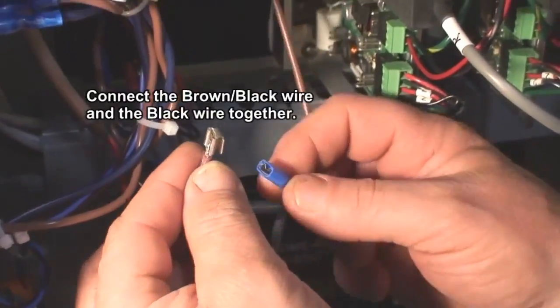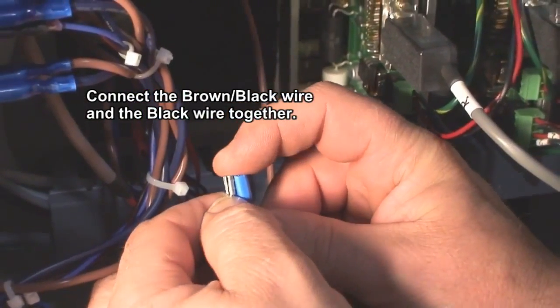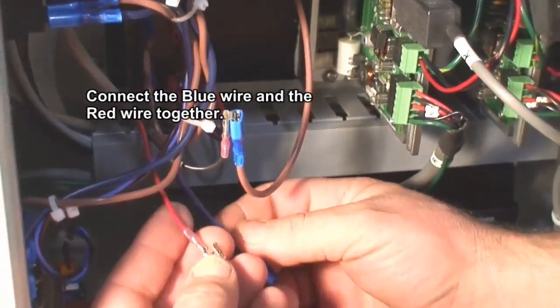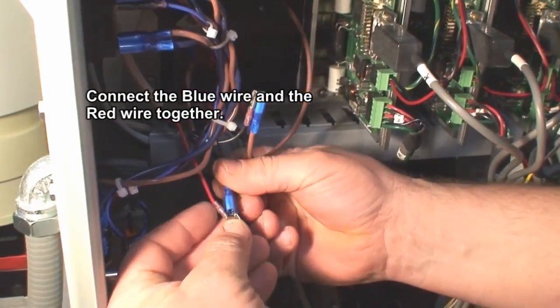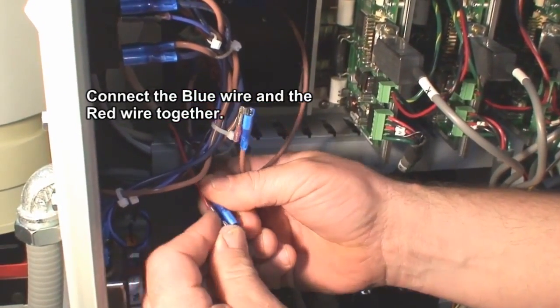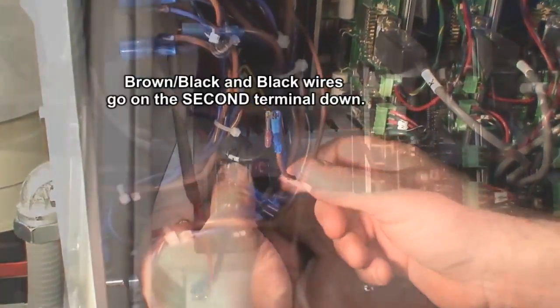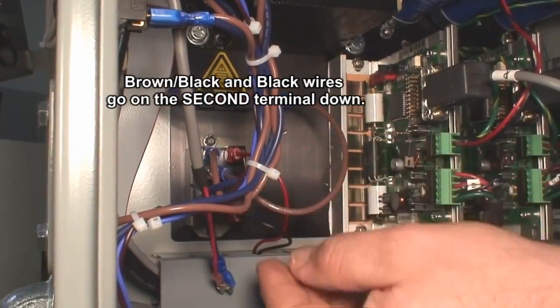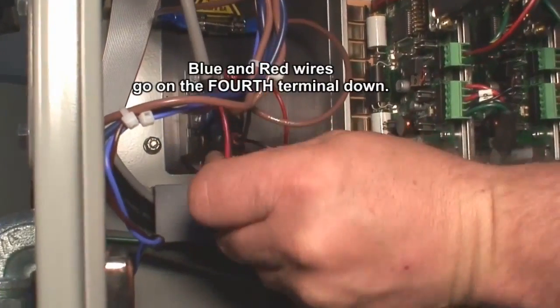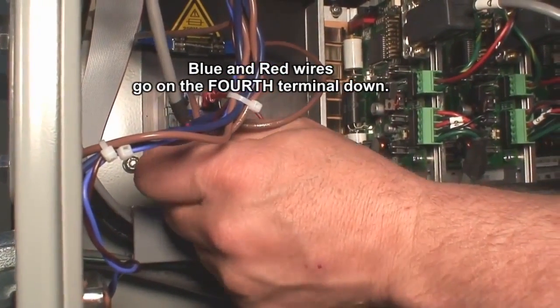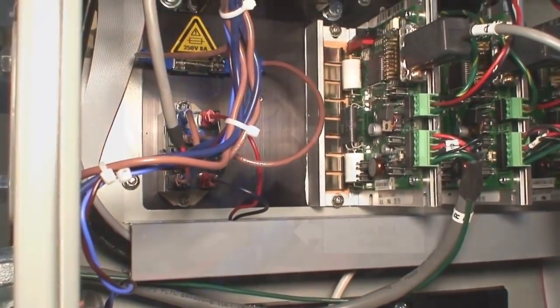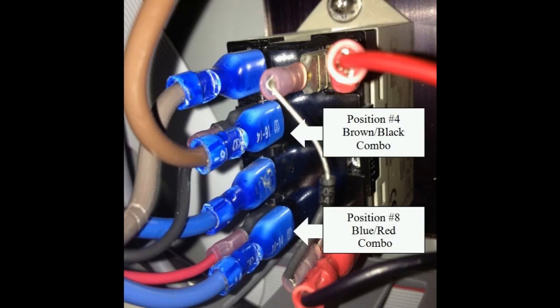The brown wire connects to the black wire with an L label, and the old blue wire connects to the red wire with a piggyback connector. The brown and black wires labeled L go on the second terminal down. The red and blue wires go on the fourth terminal down. This is what the whole thing should look like when you're finished. Brown and black, second terminal down. Red and blue, fourth terminal down.